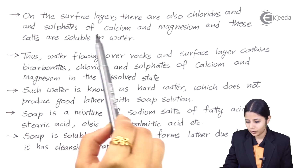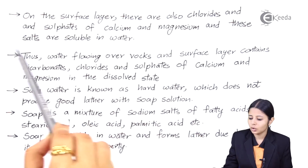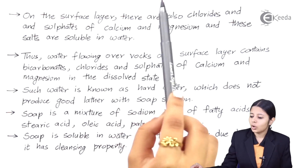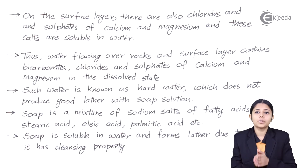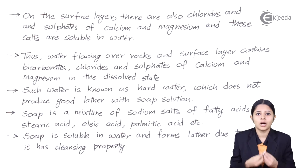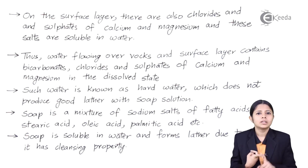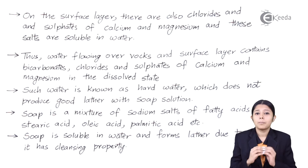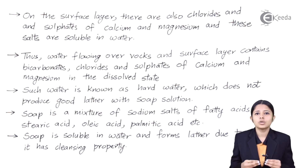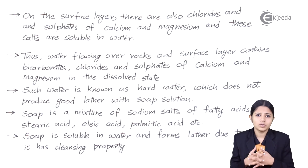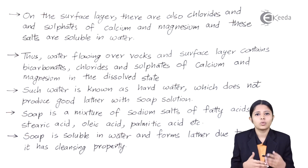On the surface layer, there are also chlorides and sulfates of calcium and magnesium, and these salts are soluble in water. The chlorides and sulfates form permanent hardness. When talking about hard water, there are two types of hardness: temporary hardness and permanent hardness. Temporary hardness is formed by carbonates or bicarbonates, while permanent hardness is formed by sulfates and chlorides. These do not even need a reaction — they are immediately soluble in water, making the water permanently hard.